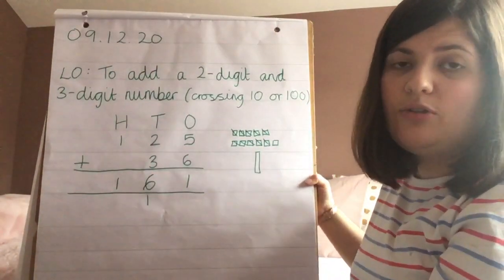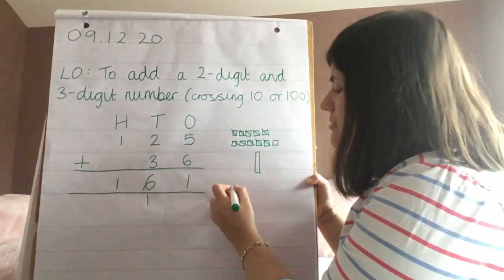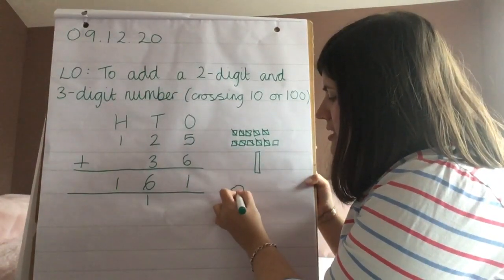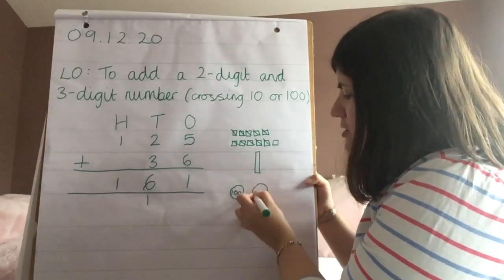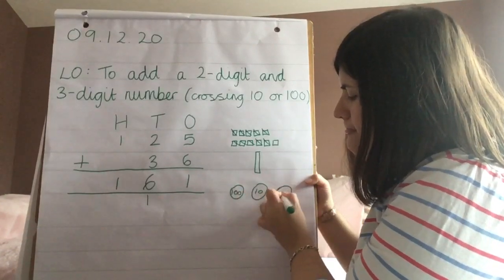If you don't want to draw the deans or the base ten, you could draw a place value counter. Like I showed you yesterday, you could draw your hundreds, your tens, and your ones.